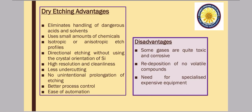The disadvantages: some of the gases used are quite toxic and corrosive in nature. There is redeposition of non-volatile compounds on your wafer. It requires specialized, expensive equipment. In wet etching you simply dip the wafer in a liquid solution, but here everything has to be monitored, so the equipment must be very expensive.